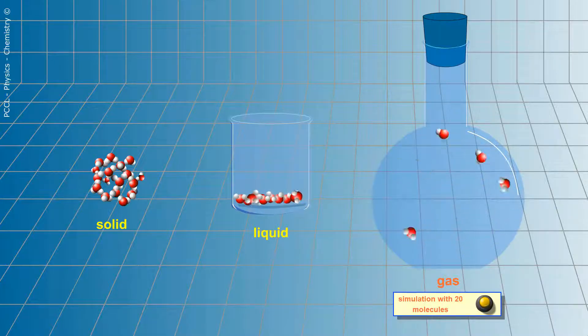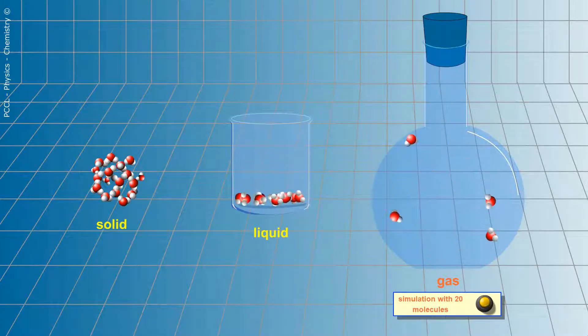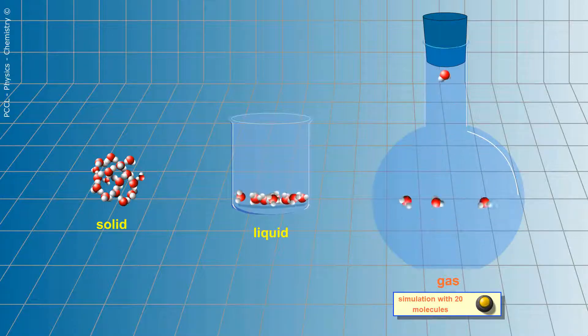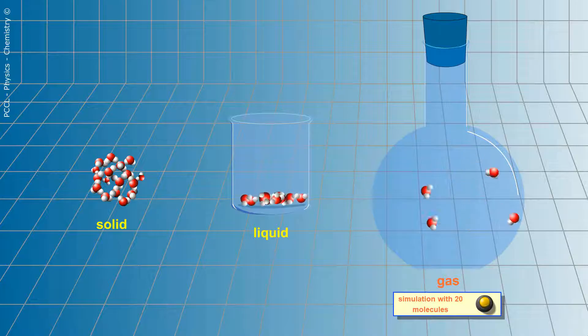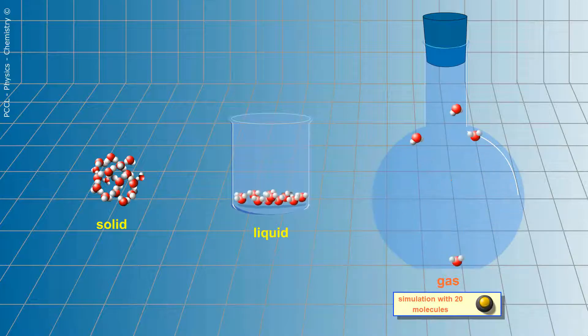Hi, let me tell you about the states of matter at the molecular scale — a scale that we cannot go to directly. I chose the example of water. The water molecule is made up of an oxygen atom and two hydrogen atoms.